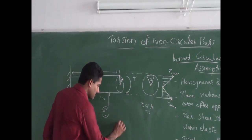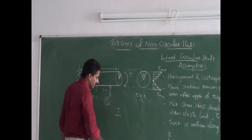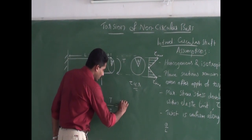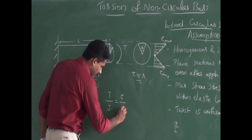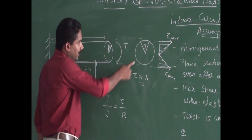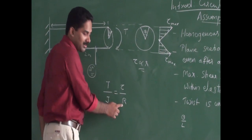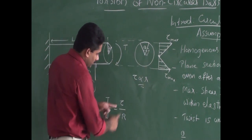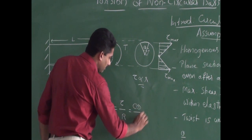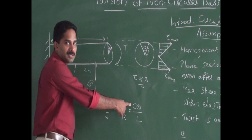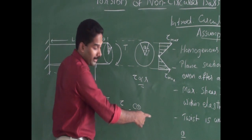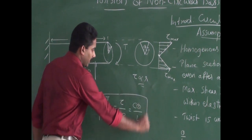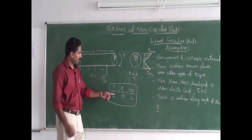The torsion equation states: the applied torque T divided by polar moment of inertia J equals tau (shear stress) divided by r. At the outer fiber that gives tau max, where capital R is the radius. This is also equal to C times theta by L, where C is the rigidity modulus (shear modulus), theta is the angle of twist, and theta by L is the angle of twist per unit length.